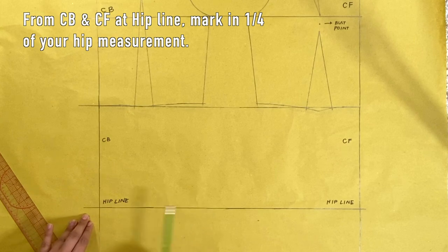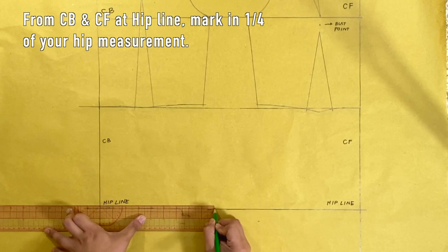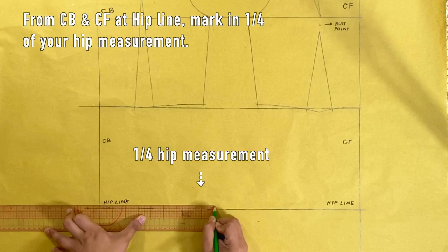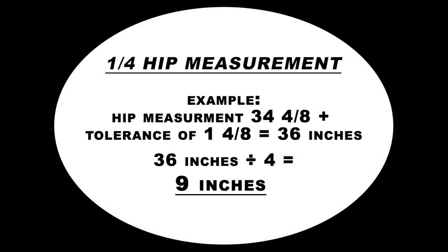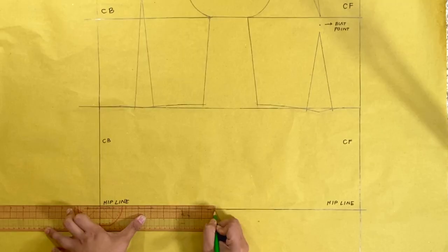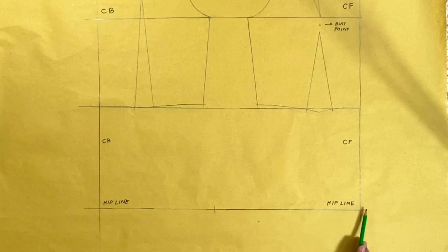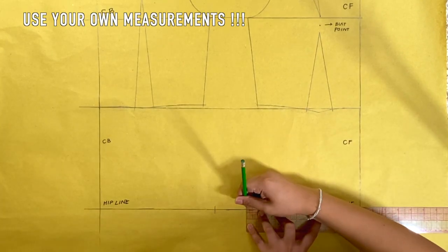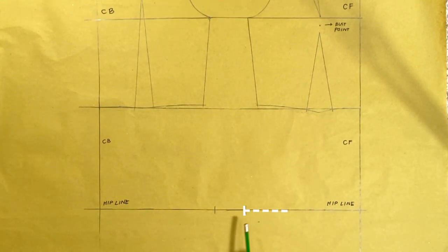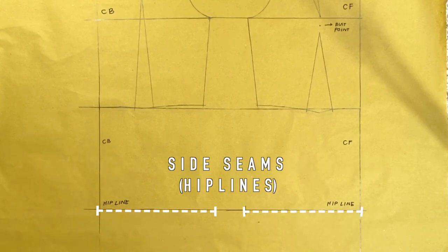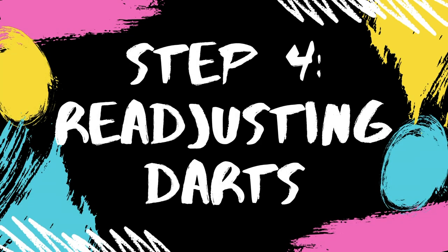Next, at center back, center front, at hip line, mark in one quarter of your hip width measurement. For example, my dress form's hip width or circumference is 36 inches and I will divide that measurement by 4 and I got 9 inches. Now, I will use this measurement on both back and front hip lines. Reminder, use your own measurements for this procedure. Okay, let's now move on to step 4.